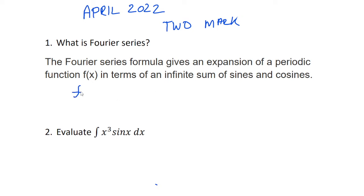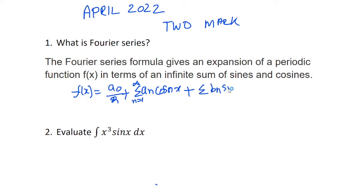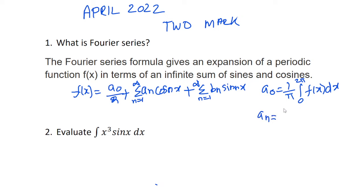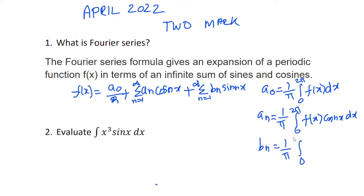The Fourier series formula is: f(x) = a0/2 + summation of an·cos(nx) from n=1 to infinity, plus summation of bn·sin(nx) from n=1 to infinity. Here, a0 = (1/π)·∫₀^(2π) f(x) dx, for the interval 0 to 2π. And an = (1/π)·∫₀^(2π) f(x)·cos(nx) dx. Similarly, bn = (1/π)·∫₀^(2π) f(x)·sin(nx) dx.